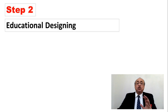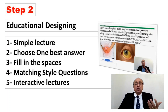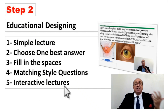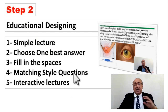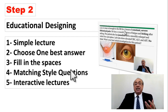The second step is educational designing. By that I mean what type of educational design am I going to choose for this piece of information. Am I going to do it as a simple lecture, or choose the one best answer, fill in the spaces, matching style questions, or interactive lectures where I give some information, wait for an answer, and react by adding more information. It's important to move across all of them to make it really interesting for the audience to follow.